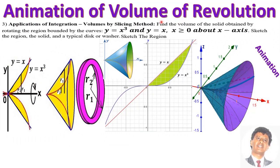This is an animation of volume of revolution from a Calculus 2 exam 2 review. The first problem is: find the volume of the solid obtained by rotating the region bounded by the curve y equals x cubed and y equals x, where x is greater than or equal to zero.